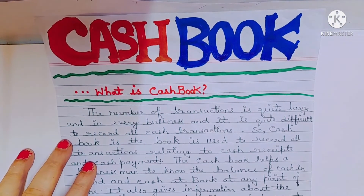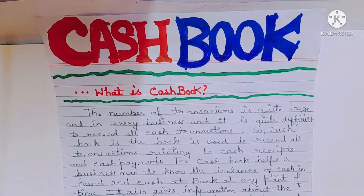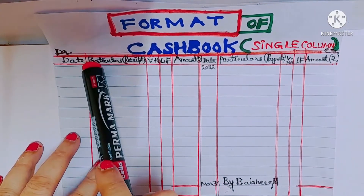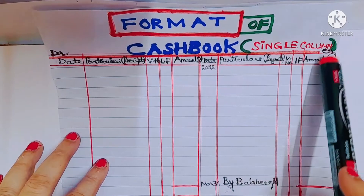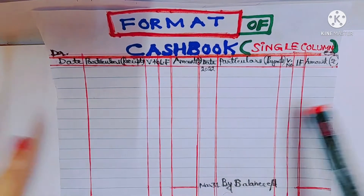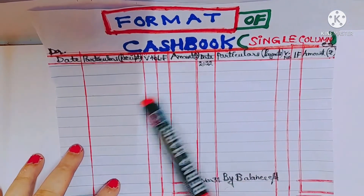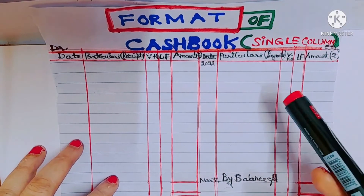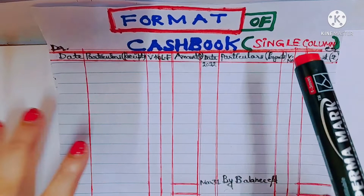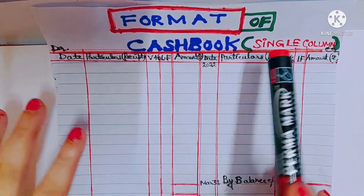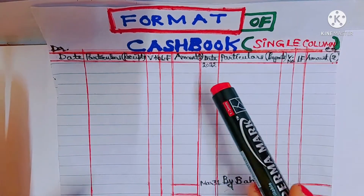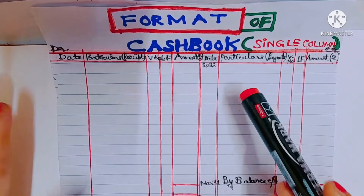Cash receipts are entered on the debit side of the cash book and cash payments are recorded on the credit side. Cash book is merely the cash account, because cash account is not opened in the ledger. Since cash book is a journal as well as a ledger, we don't have to open cash account in the ledger. Cash book is nothing but a ledger account, and we know how to prepare a cash account.